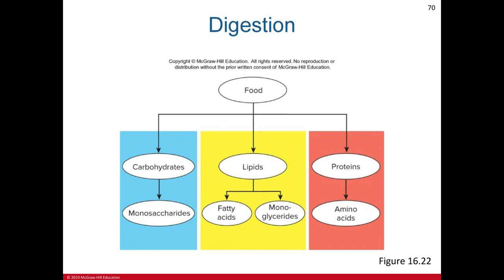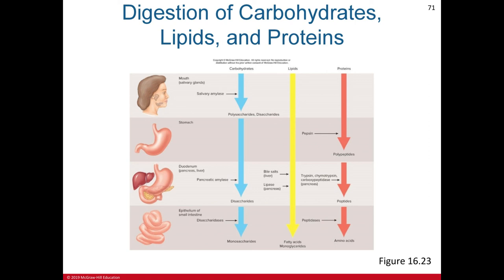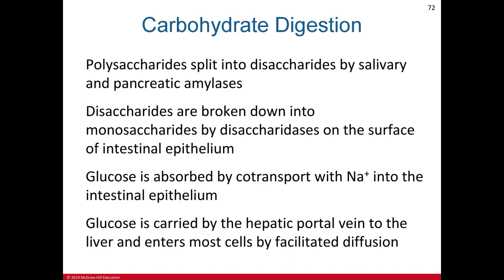The breakdown of food depends on the type of molecule: carbohydrates are broken down into monosaccharides, lipids into fatty acids and monoglycerides, and proteins into amino acids — the building blocks of proteins. These end products can be easily absorbed by the body. For carbohydrate digestion, polysaccharides are split into disaccharides by salivary and pancreatic amylase, then disaccharides are broken down into monosaccharides by disaccharidase enzymes on the surface of the intestinal epithelium.